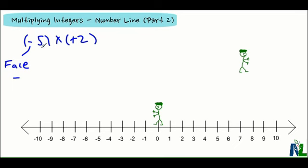The five again tells me to take five steps. This positive tells me that I'm going to walk forward. And my step size is two.